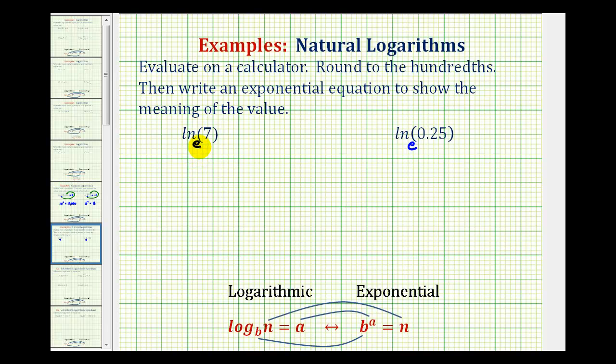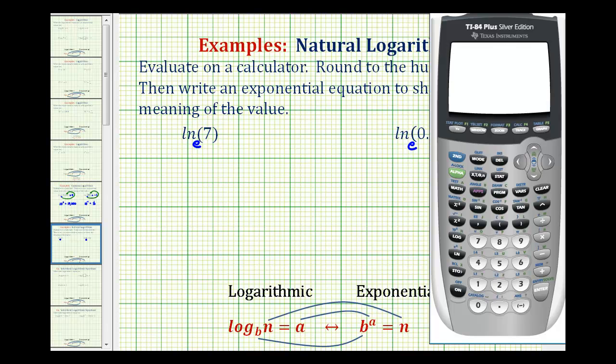The good news is most calculators contain a common log button as well as a natural log button. So if we go to the calculator, to evaluate natural log 7 we can just press ln, 7, close parenthesis, and press enter. We do want to round to the hundredths, so this will be approximately 1.95.